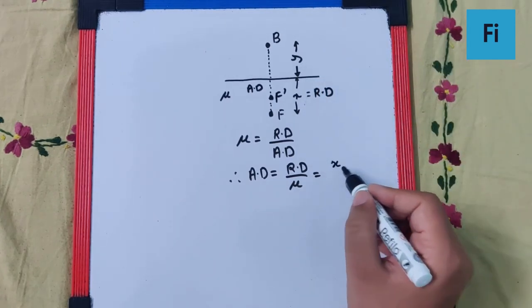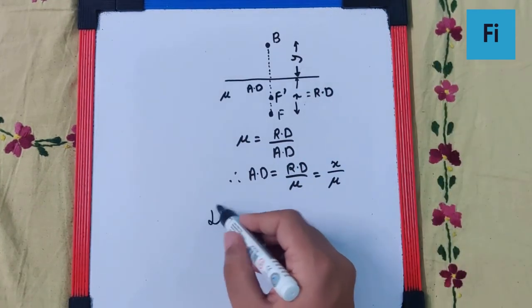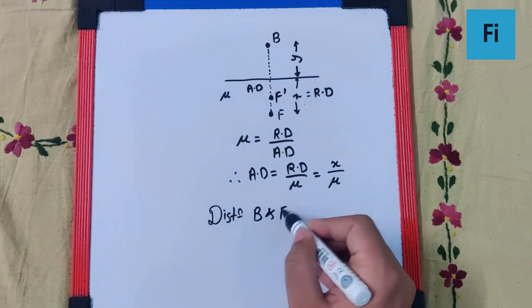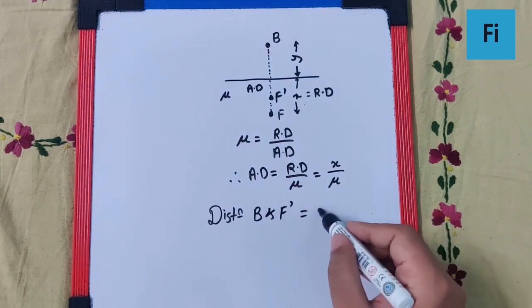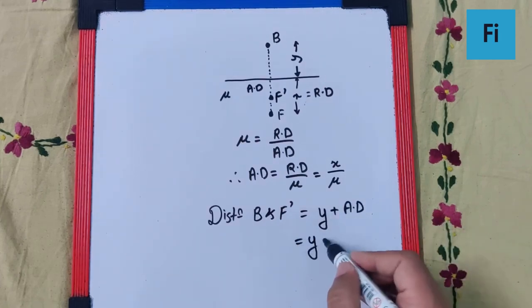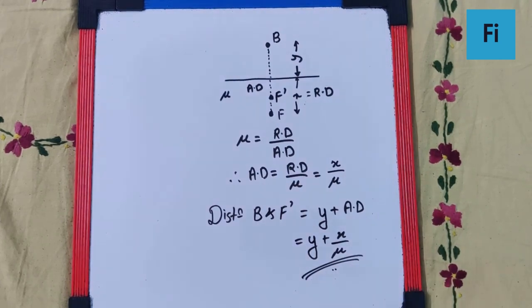Now I can say the distance between B and F dash is going to be y plus the apparent depth, and that is y plus x by mu. And that is going to be our final answer.